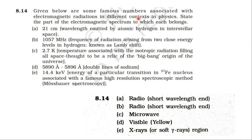Some famous numbers in physics and their part of the electromagnetic spectrum: 21 cm wavelength emitted by atomic hydrogen in interstellar space corresponds to radio waves. 1057 MHz frequency corresponds to radio waves (shorter wavelength). 2.7 Kelvin temperature associated with isotropic background radiation (relic of the Big Bang) corresponds to microwaves. 5890 and 5896 Ångström sodium double line spectrum corresponds to visible light. 14.4 keV energy from Fe-57 nucleus corresponds to X-ray or soft gamma region.